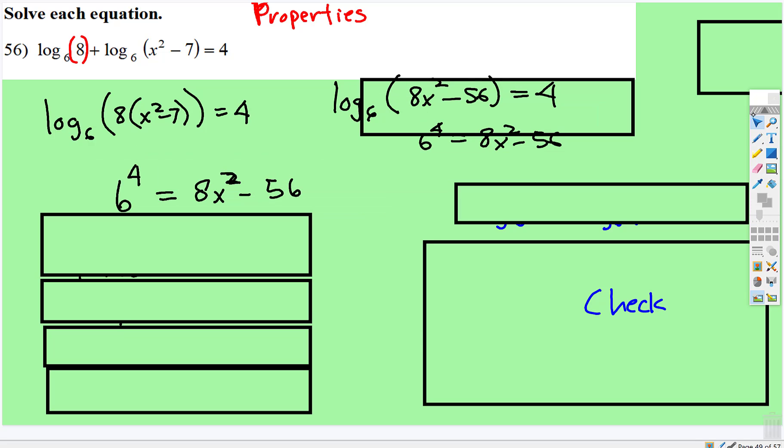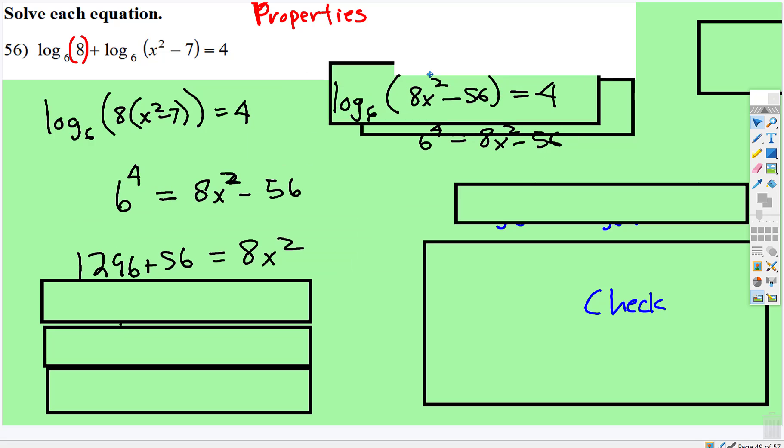So that's what we have. 6 to the 4th is equal to 8x squared minus 56. 6 to the 4th is 1296.